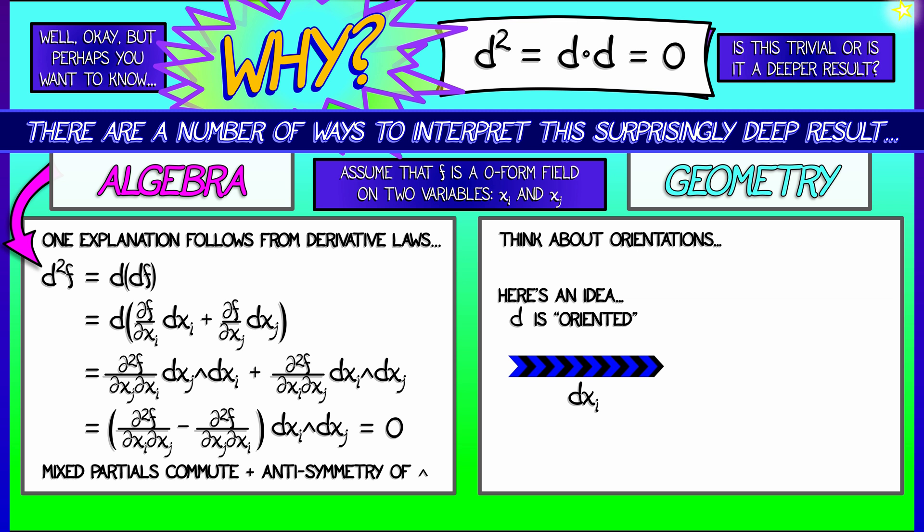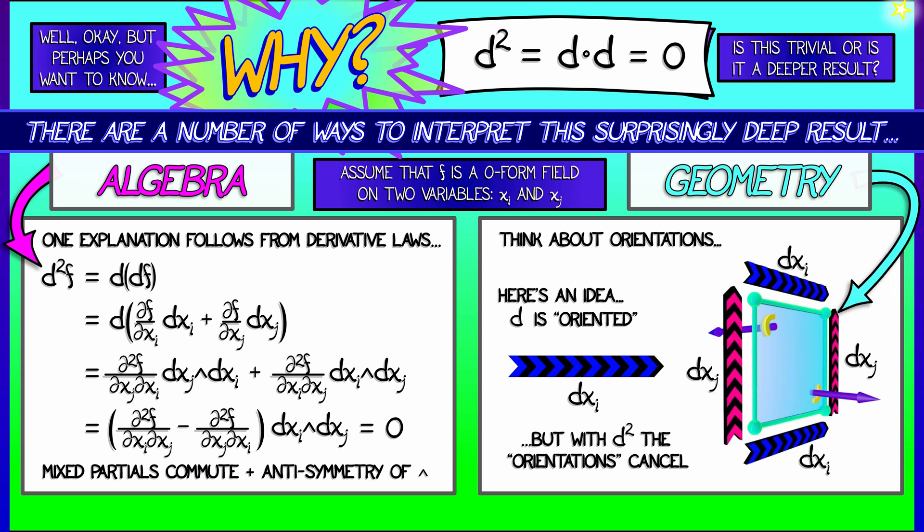But what happens when we apply the differentiation operator twice is that when you try to make sense of orientations, things cancel. Think about it. Take dxi and then dxj and assign an orientation to the associated two form using, say, a right-hand rule. Now do the same thing with dxj, then dxi. And what you get is the opposite orientation.